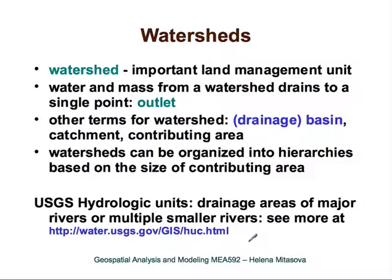We will finish this section with a brief description of watersheds. Watersheds are important land management units because water and mass from a watershed drain to a single point called the outlet. Other terms include drainage basin, catchment, or contributing area when associated with any point in the landscape. Like stream networks, watersheds can be organized into hierarchies based on the size of contributing area. A good example is the USGS hydrologic units, which define drainage areas of major rivers all the way down to smaller stream networks.